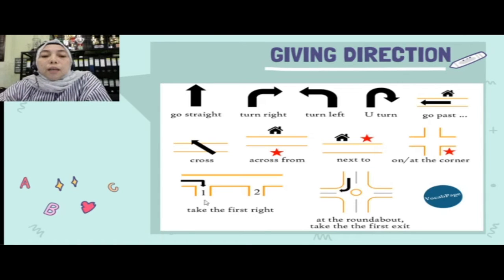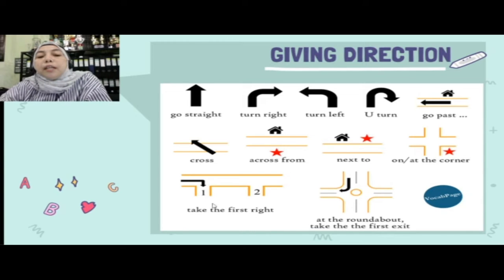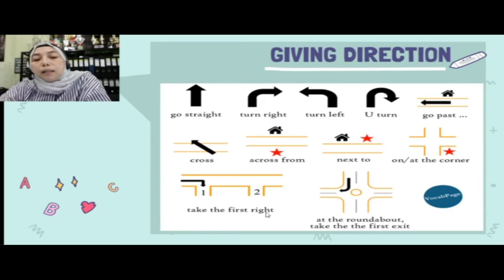Kalau ada dua gang misalnya, kita mau belok di gang pertama sebelah kanan, kita bilang 'take the first right.' Kalau rumahnya ada di gang kedua: 'take the second right.' Kalau ada di kiri: 'take the first left.' Tinggal diganti kiri atau kanan, dan urutannya — the first atau the second.